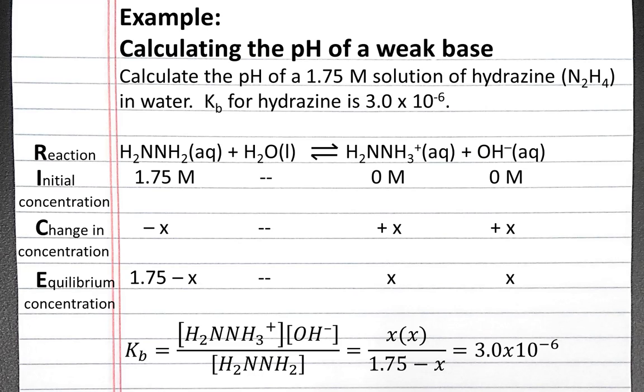Let's think about our equilibrium. Since the Kb value is 3 times 10 to the negative sixth, there will be a relatively small amount of product compared to reactant at equilibrium.